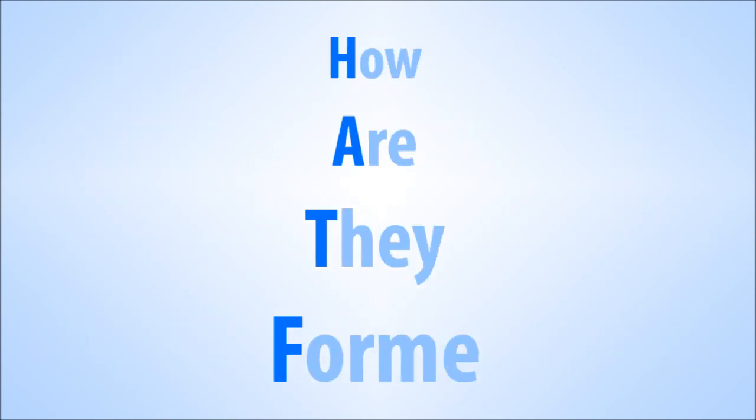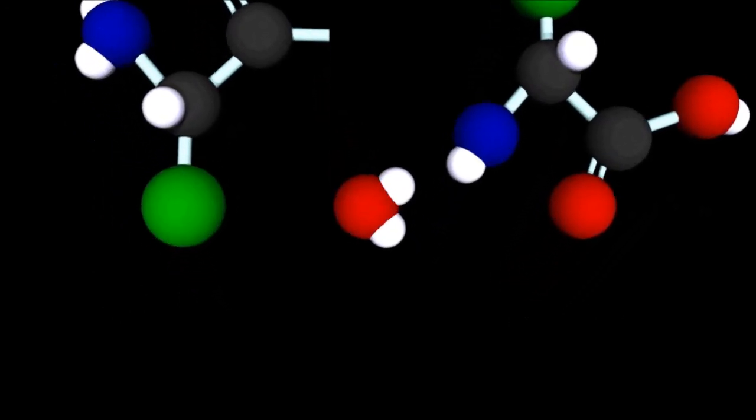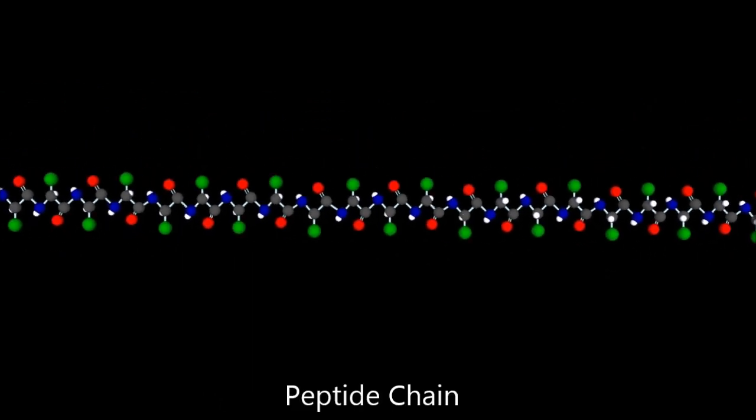How are they formed? Proteins are formed like a pearl necklace. Similar to the pearls on the string, multiple amino acids bind together to form a peptide chain. This chain adopts a specific three-dimensional structure. This process of attaining a 3D shape from a chain is known as protein folding.